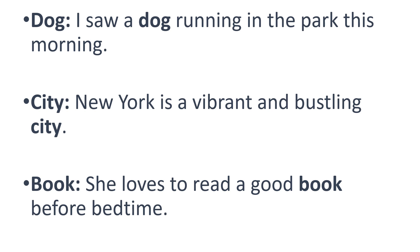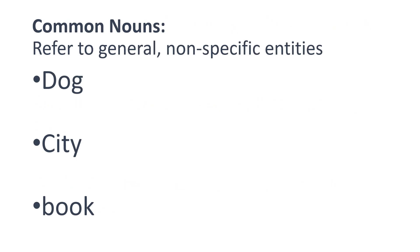Dog, which is an animal. City, a place. And book, which is a thing. What is common in these three nouns? Dog, city and book — they are referring to general and non-specific entities. We are not telling which city or which book or which dog; we are simply referring to something general. These types of nouns are called common nouns.